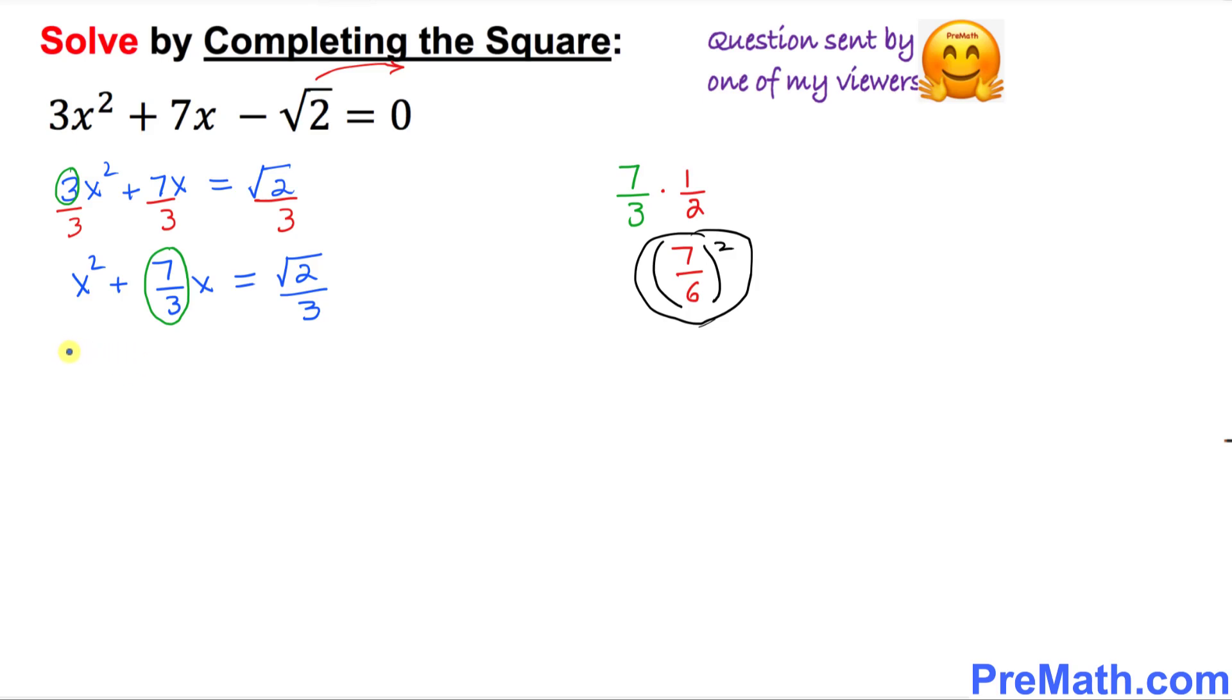So let's move on. x² + (7/3)x + (7/6)² = √2/3 + (7/6)². Now I'm going to add 7/6 squared on this side and 7/6 squared on this side as well.